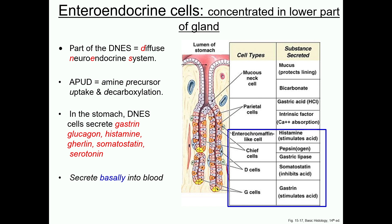One important difference in the activity of enteroendocrine cells is that they secrete basally into the blood, in contrast to the other cells which secrete apically into the lumen. By definition, endocrine cells regulate tissues by means of secretion into blood, and these cells act in the exact same way. The products can act locally via paracrine means, or systemically via endocrine means.